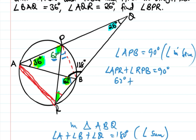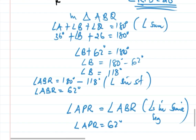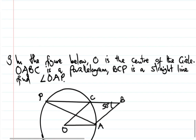Angle APR plus angle RPB equals 90 degrees. Angle APR is 62 degrees, so angle RPB equals 90 degrees minus 62 degrees, which gives angle RPB as 28 degrees.